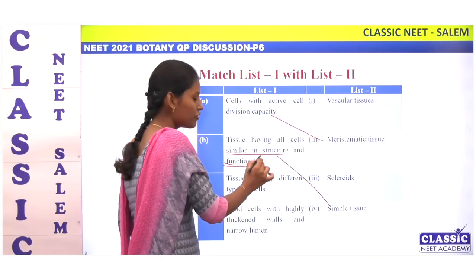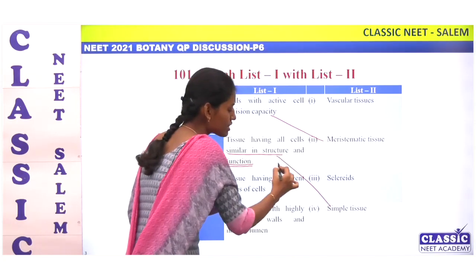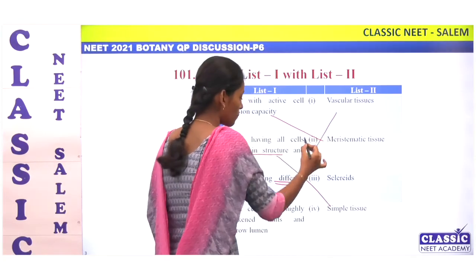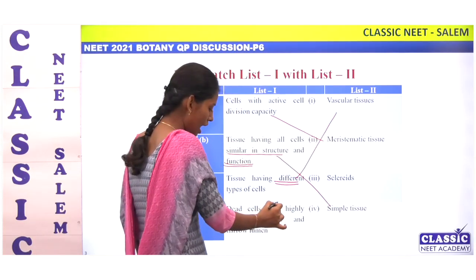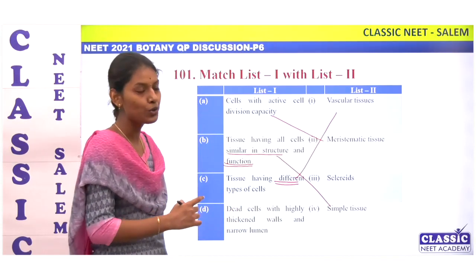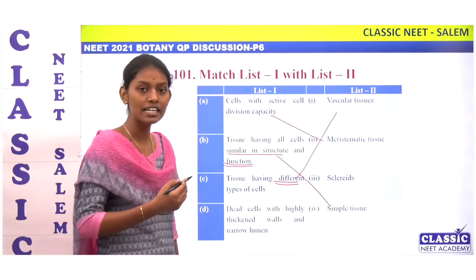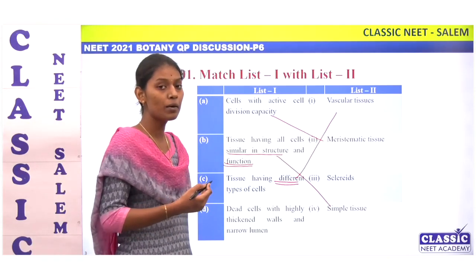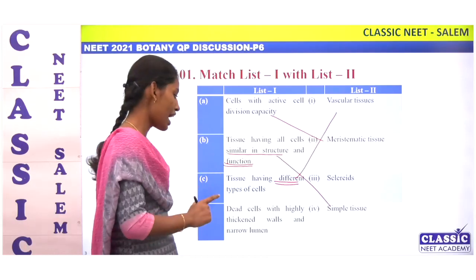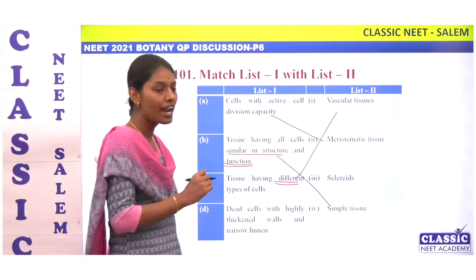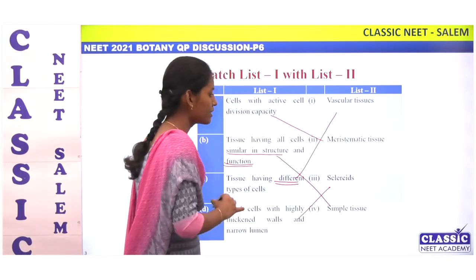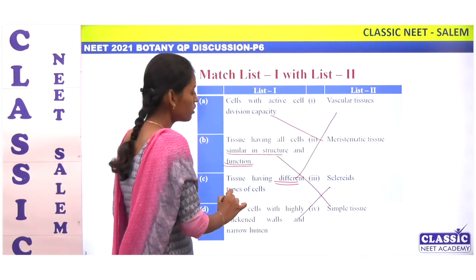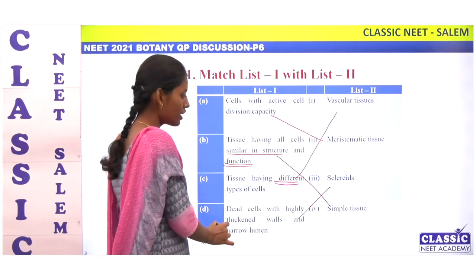Tissues having different types of cells are called complex tissue — vascular tissues are complex. Dead cells with highly thickened walls and narrow lumen are nothing but sclerenchyma. So A is 2, B is 4, C is 1, and D is 3.